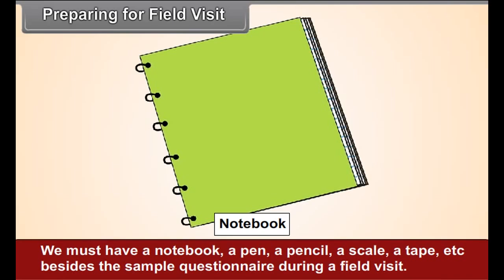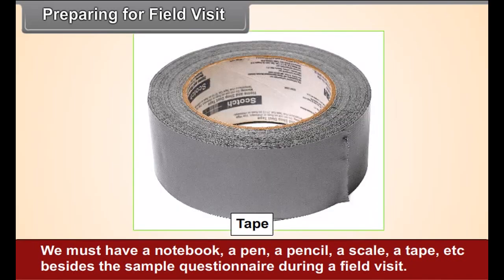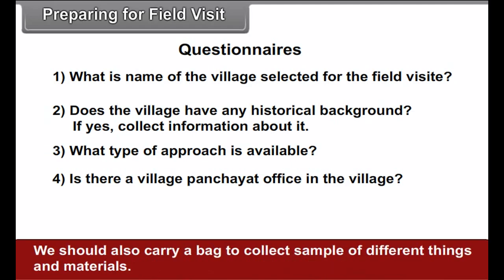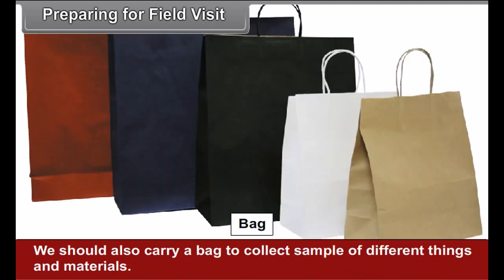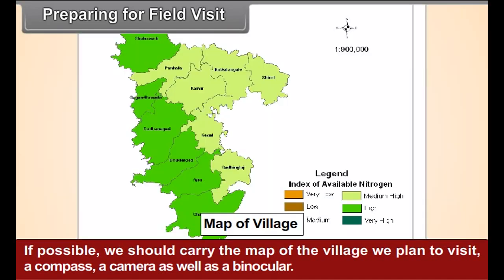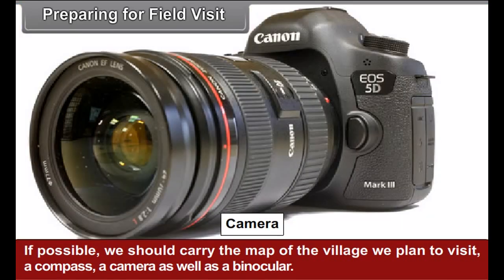Preparing for Field Visit. We must have a notebook, a pencil, a pen, a scale, a tape, etc., besides the sample questionnaire during a field visit. We should also carry a bag to collect samples of different things and materials. If possible, we should carry the map of the village we plan to visit, a compass, a camera, as well as a binocular.